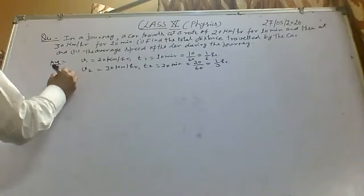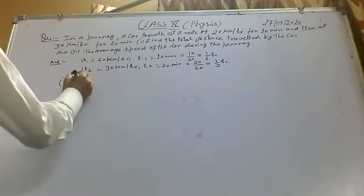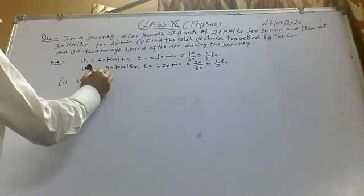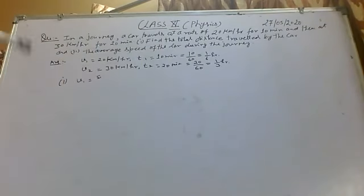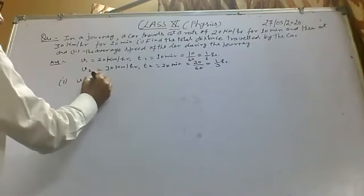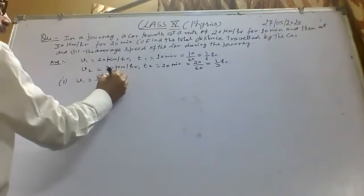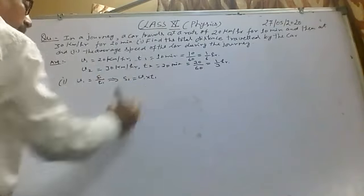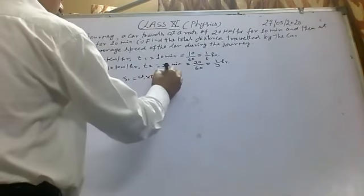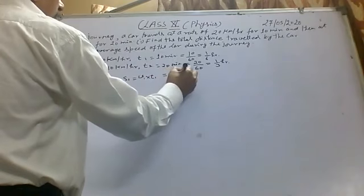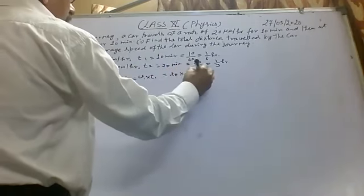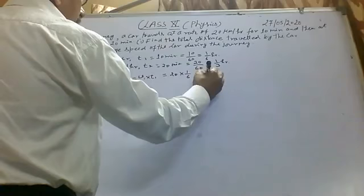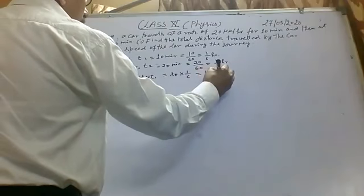So for the first part, we have to calculate the total distance traveled by the car. The distance traveled in the first part is S1. V1 equals S1 over T1, so S1 equals V1 into T1. V1 is 20 km per hour and time is 1 by 6, so S1 equals 10 by 3 km.